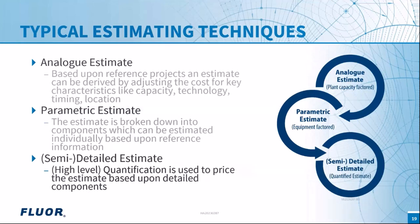The third method is the semi-detailed or detailed estimate, where we quantify everything and apply a unit rate against all quantities. Multiplying quantities times the unit rate and summing gives the overall cost. This brings in much more detail and connects more directly to design deliverables, but it takes considerably more time compared to the analog estimate.